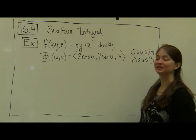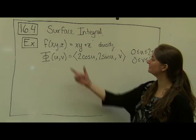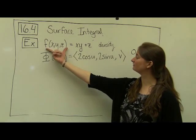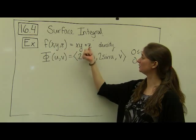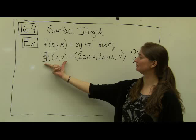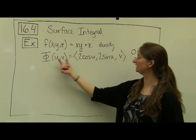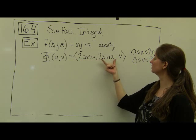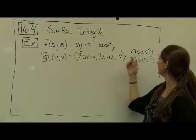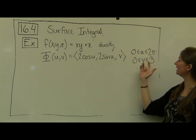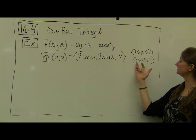So I want to conclude this with this example. Let's say that we have a density function here. Our f function is given by x times y plus z. And let's say that our parameterization of a surface, phi of uv, is given by 2 cosine u, 2 sine u, v. And notice that our u's are going from 0 to 2 pi, and our v's are going from 0 to 3.